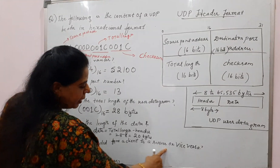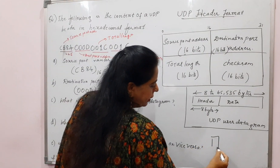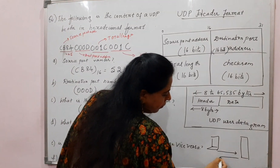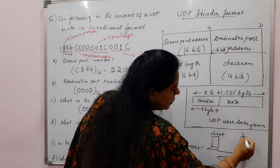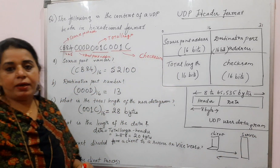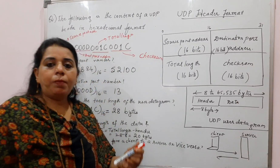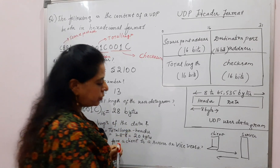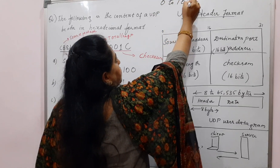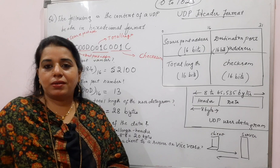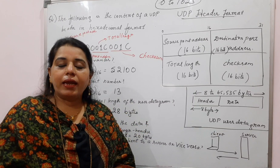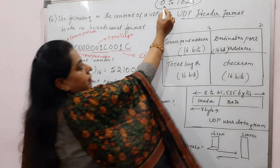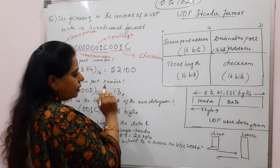Is the packet directed from a client to a server or vice versa? The transport layer works in a client-server paradigm. This can be easily determined by finding out the port address of the server, because all port numbers assigned to a server are well-known port numbers. The range for well-known port numbers is 0 to 1023. In this case, the destination port number is 13, which lies in this range — so it is a well-known port number.